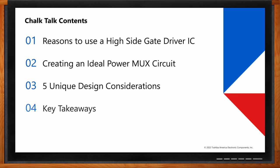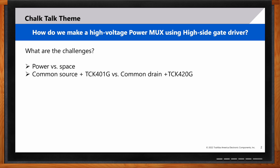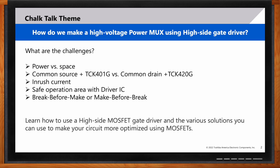What kind of challenges do we need to consider when making a high voltage power multiplexing solution, especially when using a high side gate driver? Basically, in any application — consumer or industrial — that requires a power supply, there are a set of challenges and trade-offs to consider. I'll point out aspects such as the trade-off between power and space, excess current inrush, SOA, and how to tackle these using the high side MOSFET gate driver.